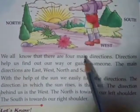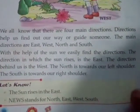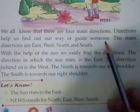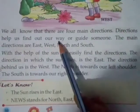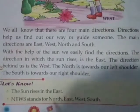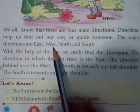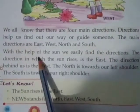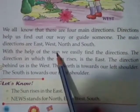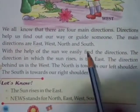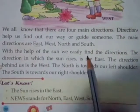We all know that there are four main directions. Directions help us find out our way or guide someone. ये directions ही होती हैं जो हमें help करती हैं हमारा रास्ता ढूंढने में या किसी और को guide करने में. The main directions are east, west, north and south. East means पूर्व, west is पश्चिम, north उत्तर and south is दक्षिण. With the help of the sun, we can easily find the directions.